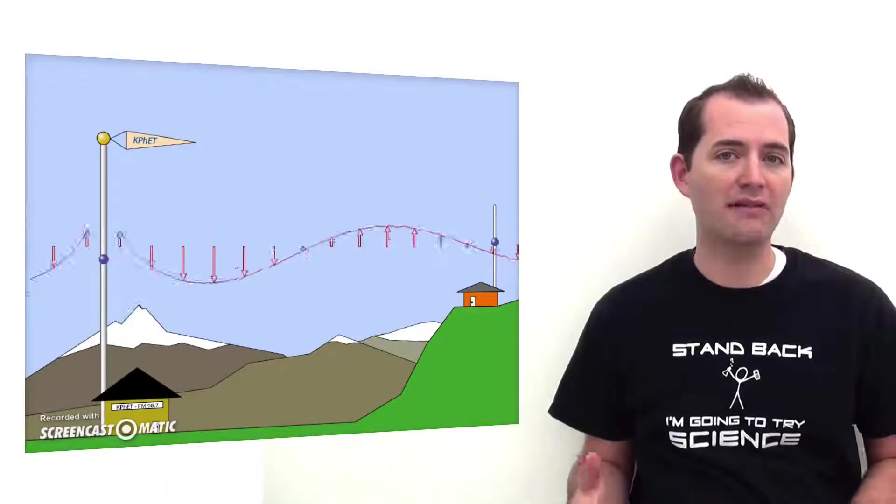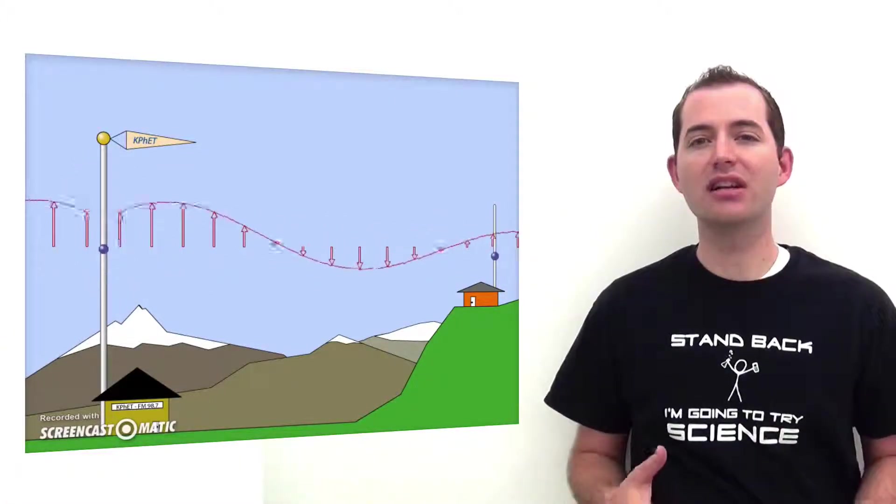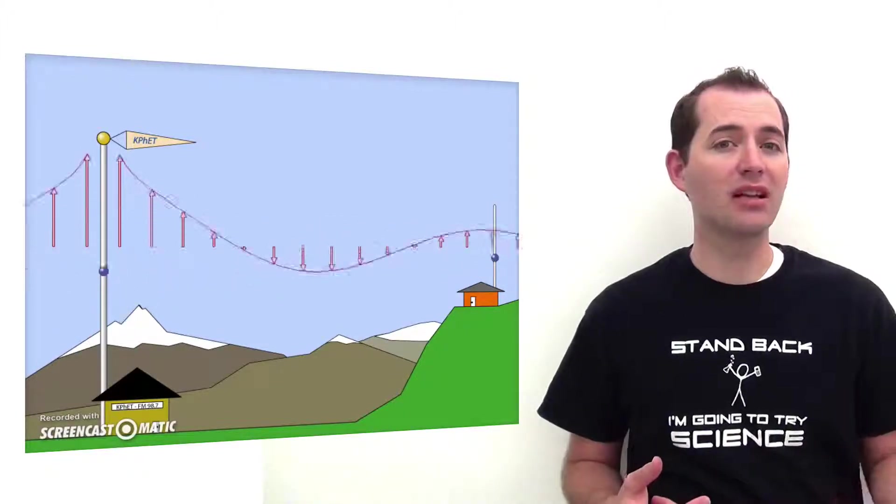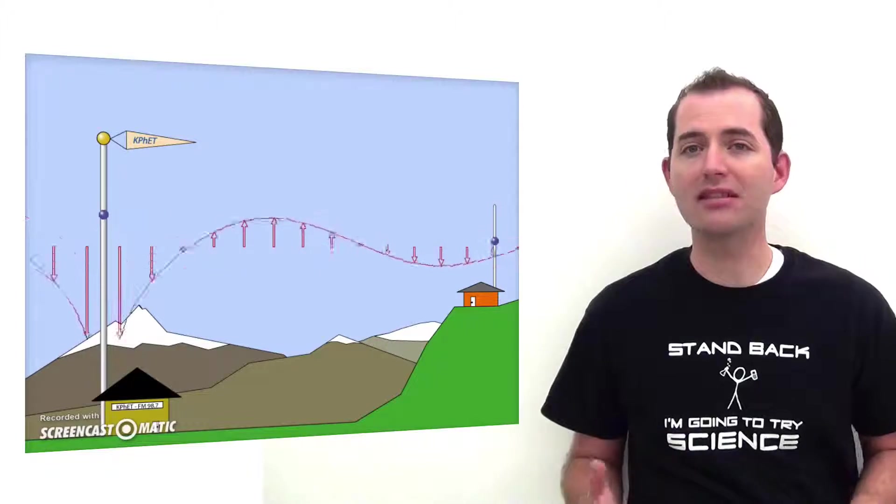Electromagnetic or EM waves are created by the vibration of an electric charge. This vibration creates a wave that has both electric and magnetic properties and components.